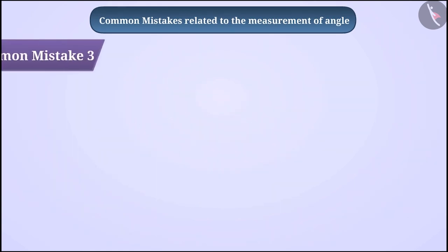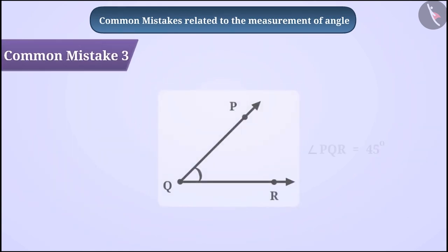Common Mistake 3: When children write the measurement of an angle, they ignore showing the degree sign with the measurement. Remember, the degree sign is the unit of angle. So, it is necessary to express this with the measurement of the angle.